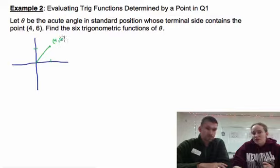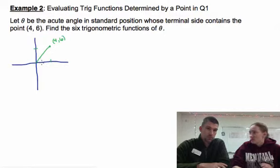So this is the point (4, 6). Notice I went out approximately four and I went up approximately six. We talked in section 4.2 about how we draw the angle. We draw the triangle so it goes down and meets the x-axis, making this a right angle.